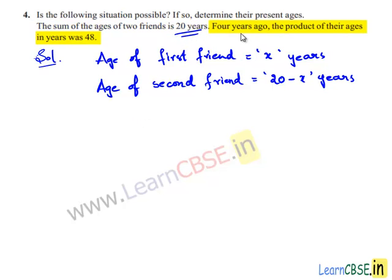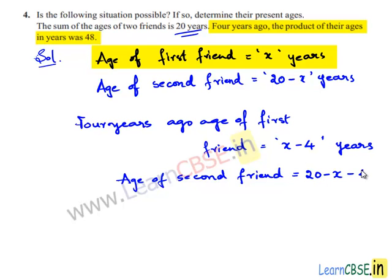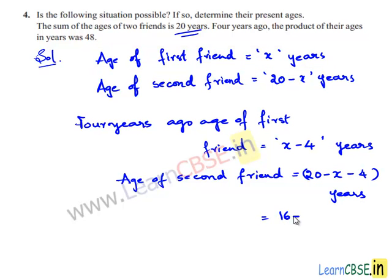According to the given condition, 4 years ago, the product of their ages in years was 48. Four years ago, age of first friend is equal to x minus 4 years. Age of second friend is equal to 20 minus x minus 4 years, which is nothing but 16 minus x years.